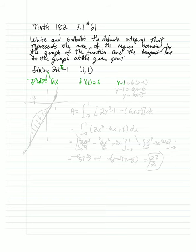So y minus 1 equals 6 times x minus 1, which gives us y minus 1 equals 6x minus 6, or y equals 6x minus 5.